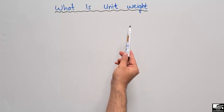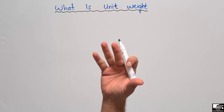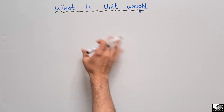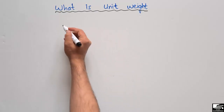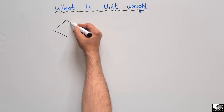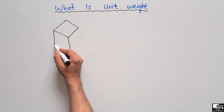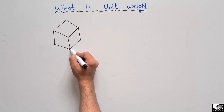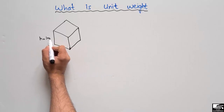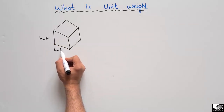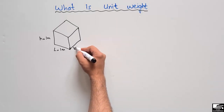Unit weight is basically the weight of a material in one unit of volume. To explain this concept, let's consider a cube where the length, height, and width of the cube are all 1 meter.